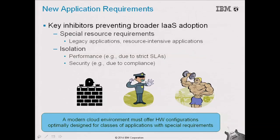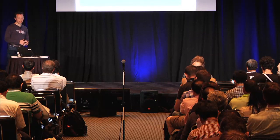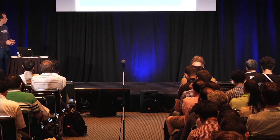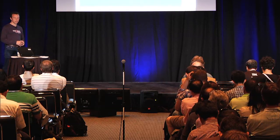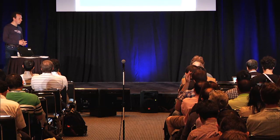Focusing on new requirements, they can be categorized as related to special resource requirements — especially for resource-intensive applications — and aspects related to isolation, which could be performance isolation or security isolation. There are of course many different applications, each requiring different things to migrate to the cloud, especially in the enterprise world, but those are the categories we've identified as most critical.